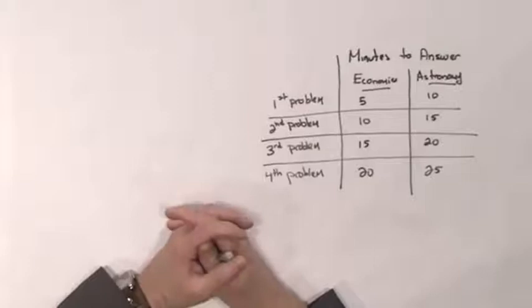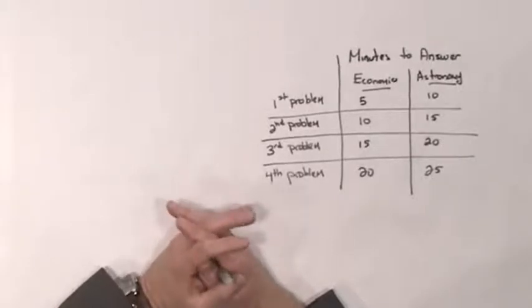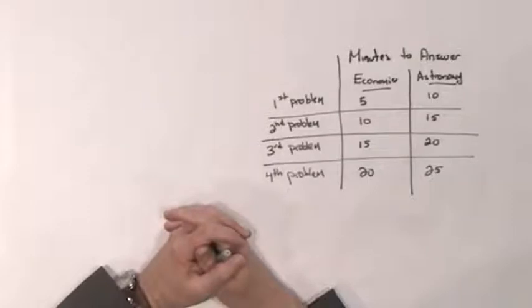Now suppose you're deciding which problem to answer next. You can spend your next few minutes answering an astronomy problem or an economics problem. Which would be the best decision given this information? If you answer astronomy, the opportunity cost is the economics problems you won't answer, and vice versa.